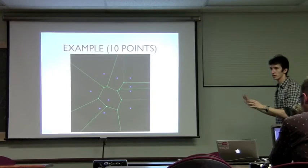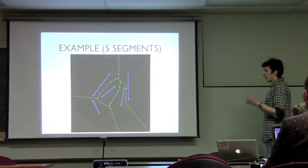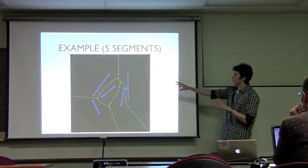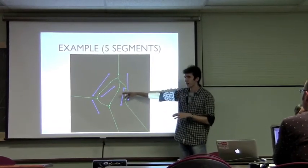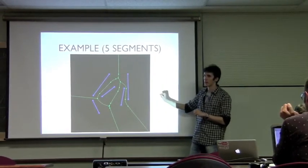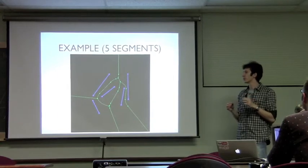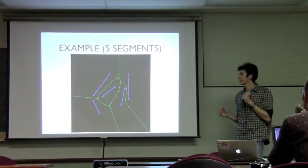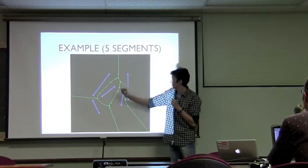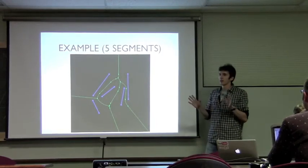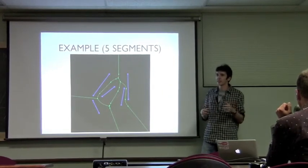Now we're going to add segments — it will be more interesting. For segments, everything is the same: in the middle you see the Voronoi cell containing that segment, and all the points inside this cell are closer to that segment than to any other segment. The only difference is computing the distance from a point to a segment — it would be one of three distances: to the start point, to the end point, or to the segment itself.